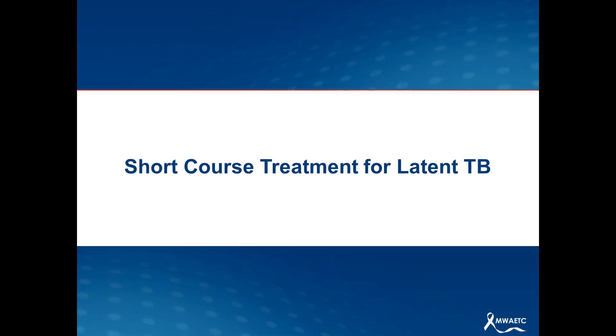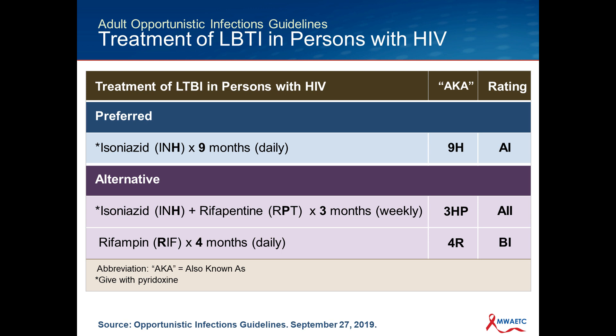Let's turn to short course treatment for latent TB. The preferred standard remains nine months of INH for latent tuberculosis infection, abbreviated 9H — the H comes from INH. There are now updated recommendations for short course treatment. Two options are available: INH plus rifapentine (abbreviated 3HP — three months of INH and rifapentine, where P comes from rifapentine) or rifampin (abbreviated 4R — four months of rifampin, R from rifampin).